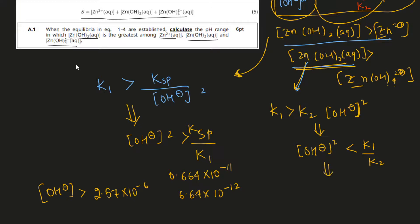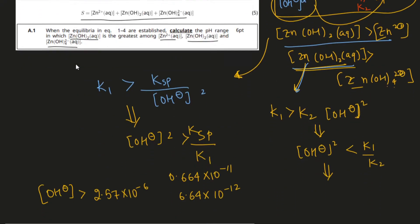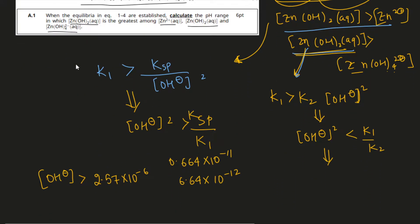For the other term, K1/K2 equals 2.62 × 10⁻⁶ divided by 0.0647. Taking the square root of that result gives 6.36 × 10⁻³. So [OH⁻] must be less than 6.36 × 10⁻³.